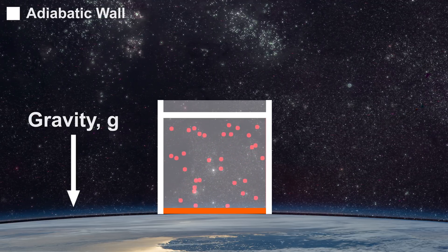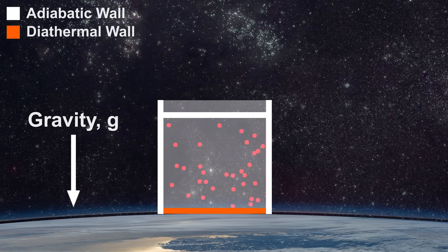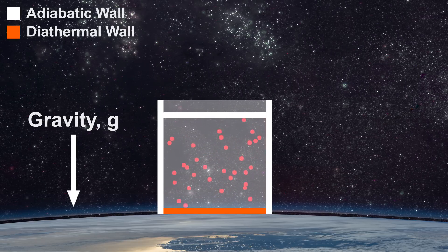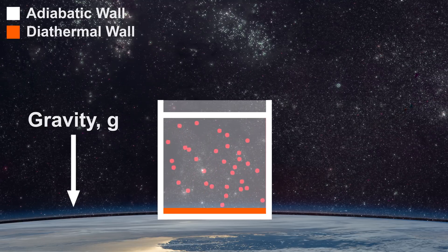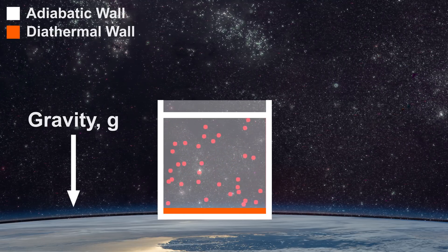The floor of our cavity is a diathermal wall which can conduct heat between our system and its surroundings. For now, our adiabatic wall will completely surround our system, including the diathermal wall.